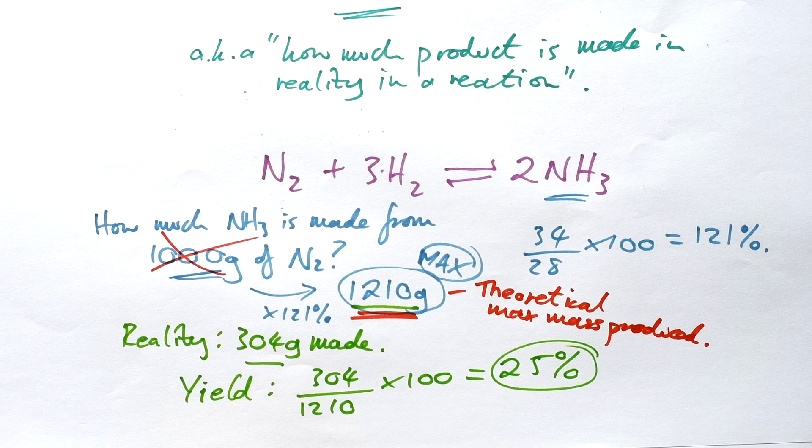That's atom economy and percentage yield - don't get confused between the two. Atom economy is about how much product we get compared to how much reactants go in. Yield is only concerned with the product - how much is actually made compared to how much could theoretically be made if all reactants reacted.